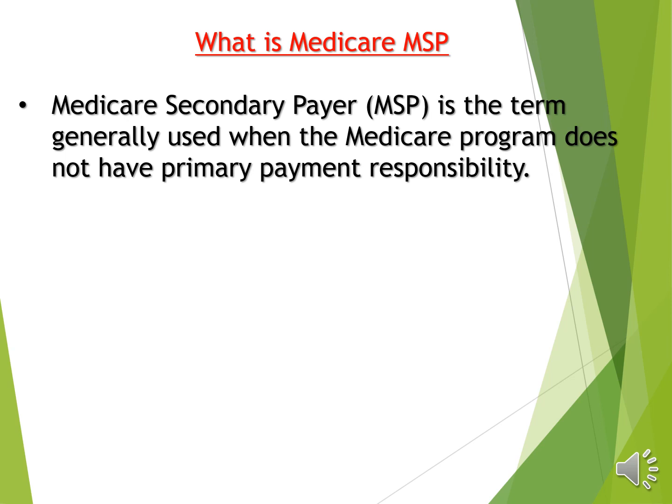Medicare is the most common government insurance in the US. When a Medicare patient also has another insurance, Medicare says it will not do primary pay. Another insurance will pay as primary first, and after that Medicare will leave the balance — patient responsibility, co-pay, co-insurance, deductible, or anything like that. Medicare will pay those responsibilities.